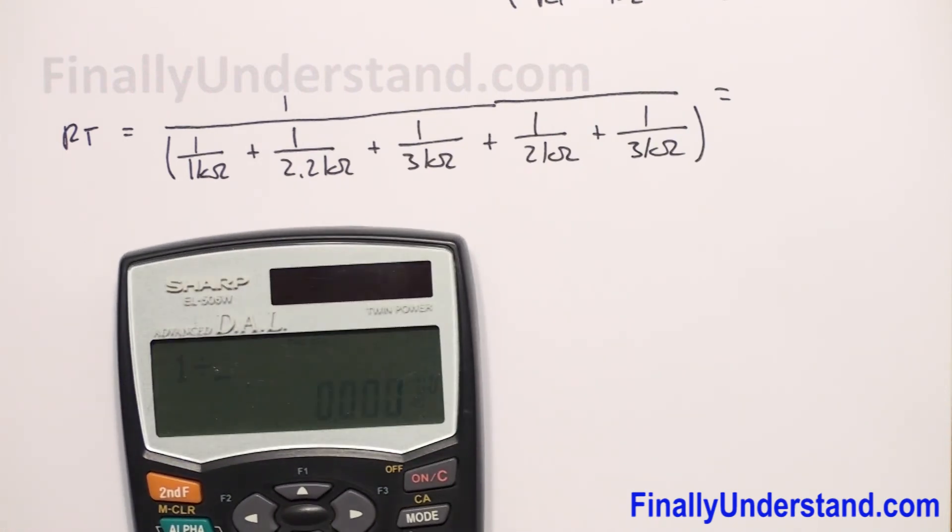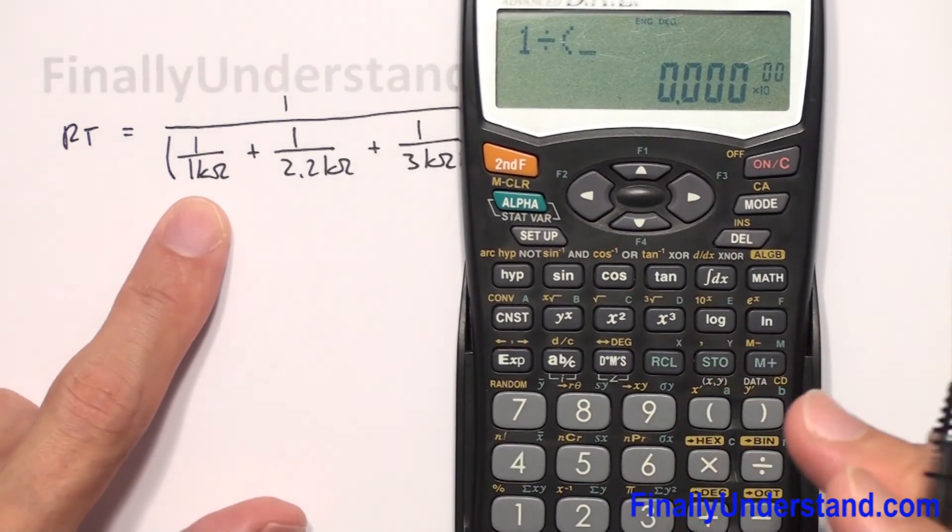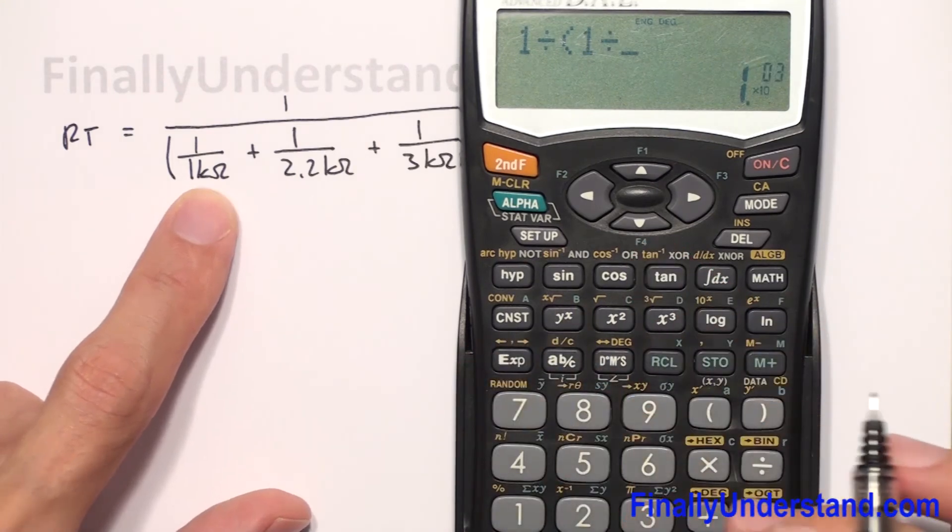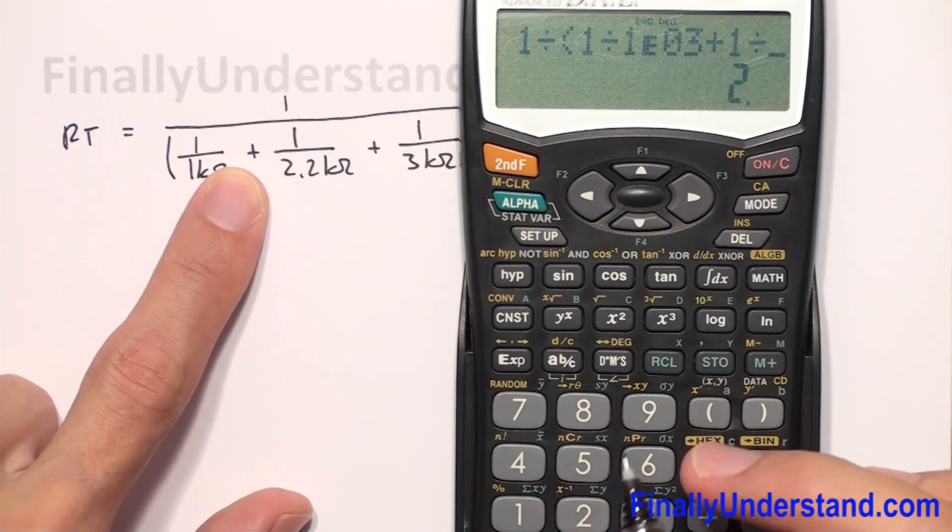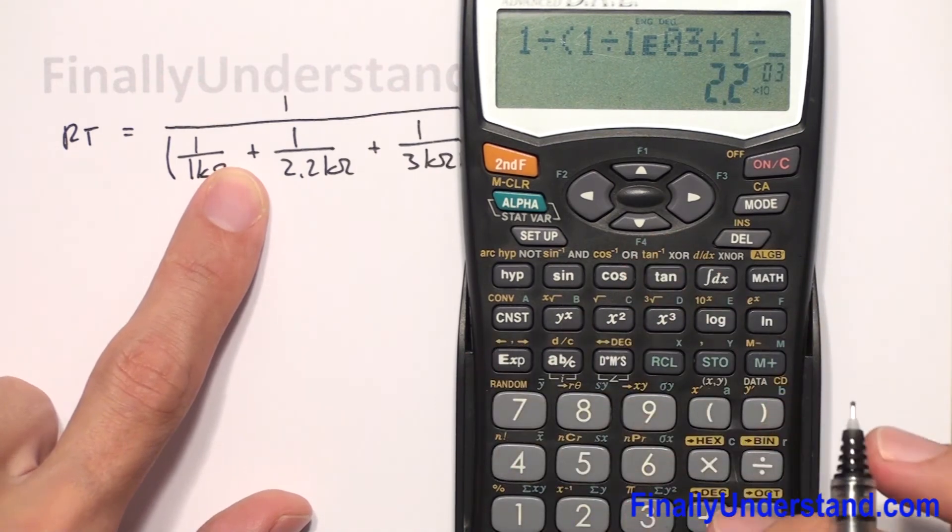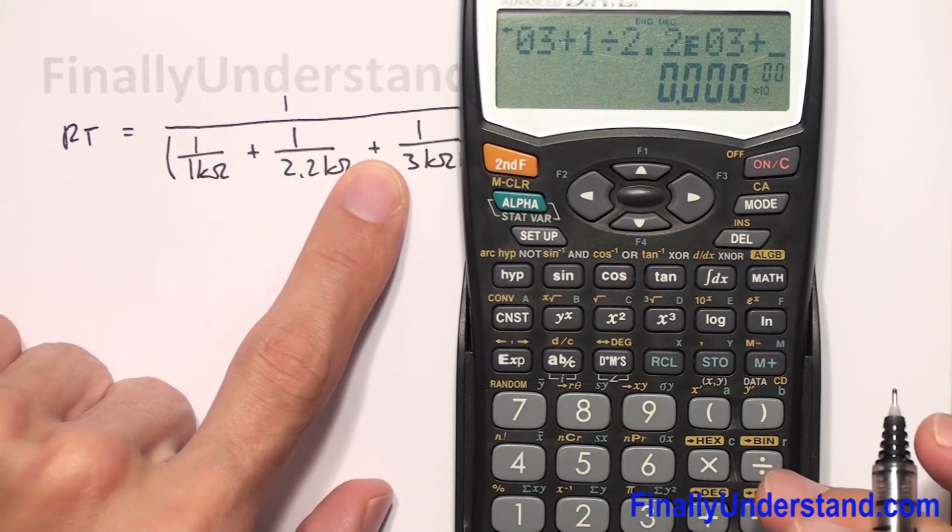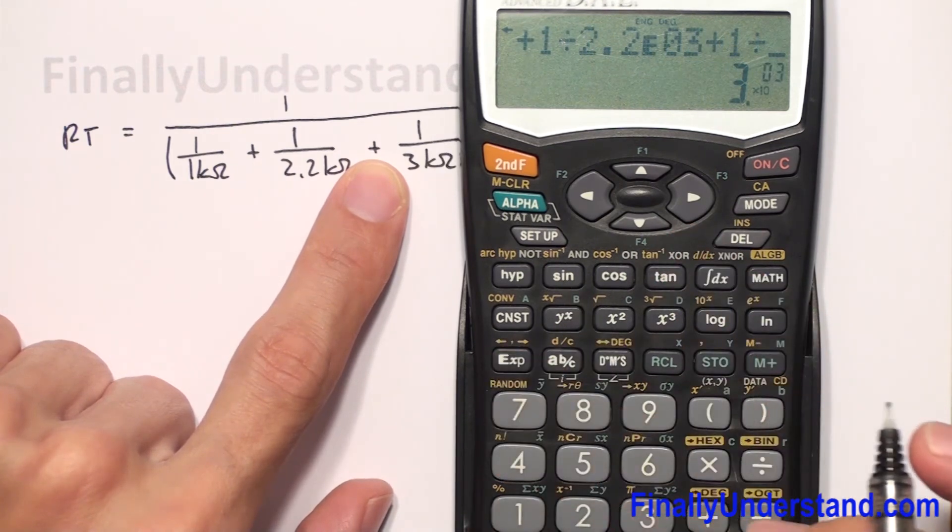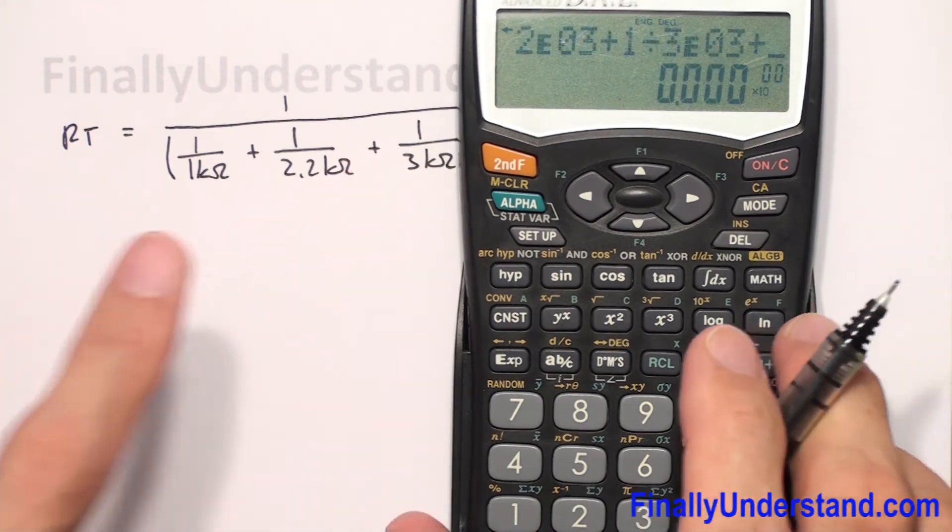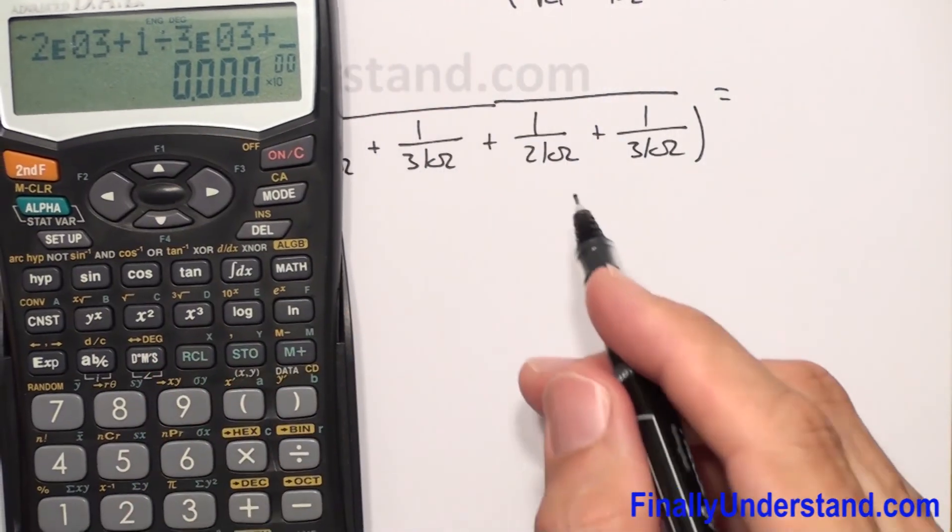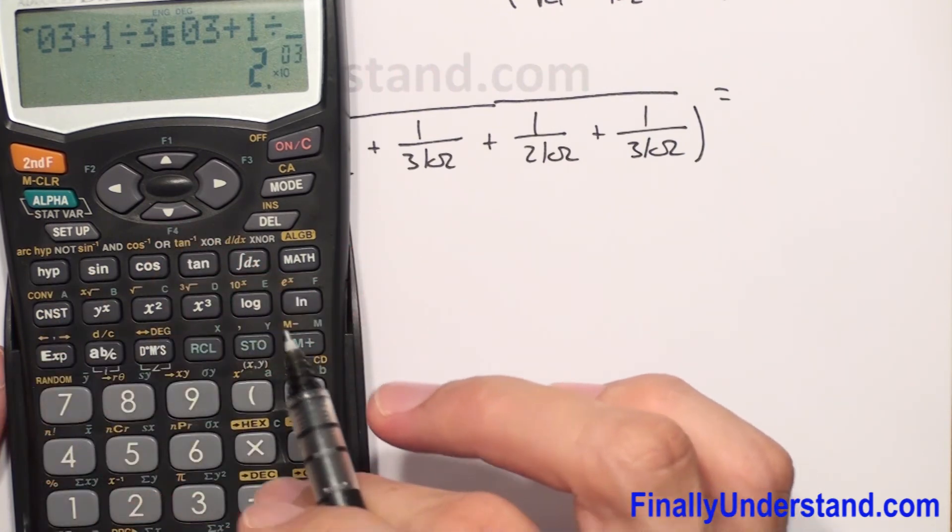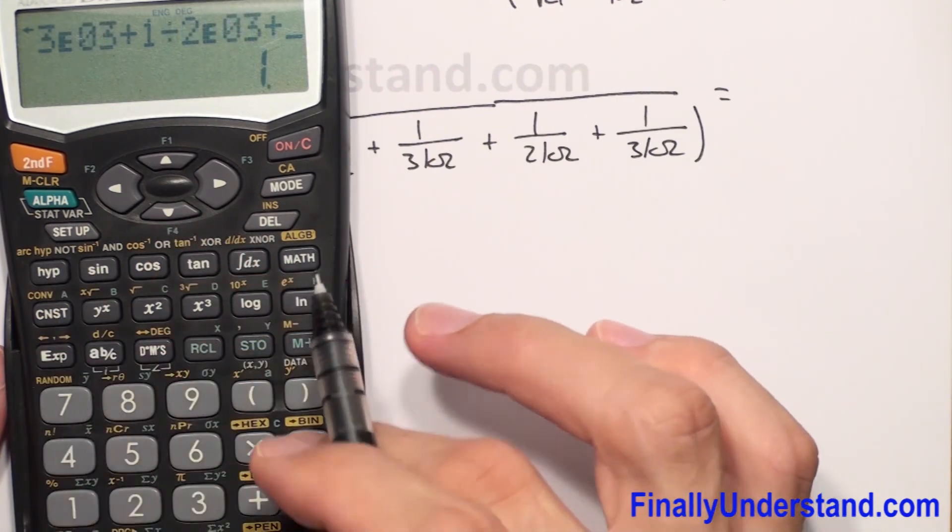So I have 1 divided by open parenthesis, and I have 1 divided by 1 exponent 3, plus 1 divided by 2.2 exponent 3, plus 1 divided by 3 exponent 3, plus 1 divided by 2 exponent 3, plus 1 divided by 3 exponent 3.